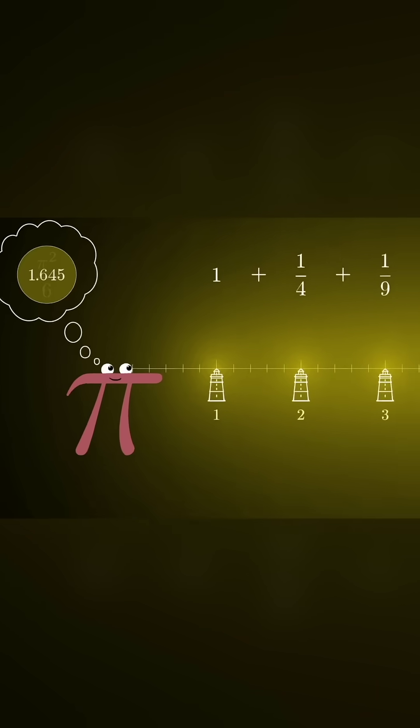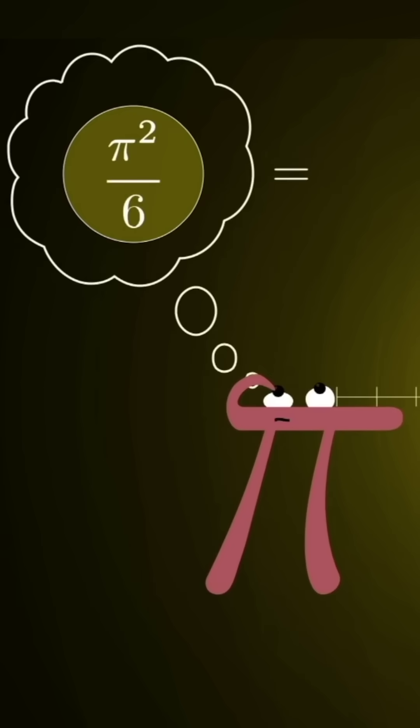This value turns out to be very special. It is precisely pi squared divided by 6. I know, it's amazing. Why is pi there, and why would you square it?